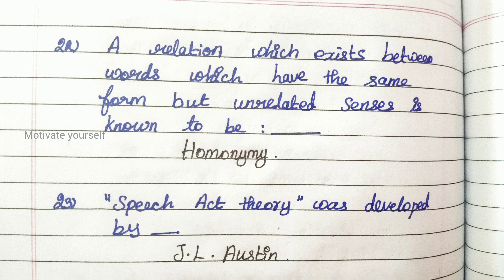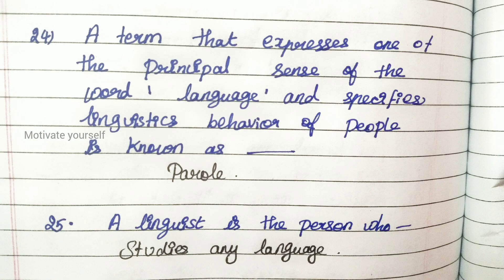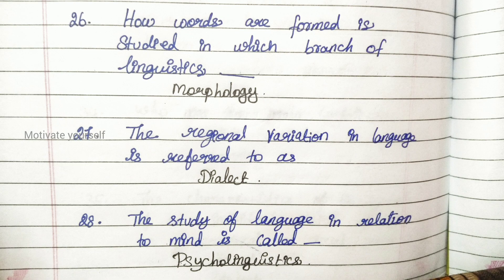Twenty-three: speech act theory was developed by J. L. Austin. Twenty-four: a term that expresses one of the principal senses of the word 'language' and specifies the linguistic behavior of people is known as 'parole'. Twenty-five: a linguist is the person who studies any language. Twenty-six: how words are formed is studied in which branch of linguistics? Answer: morphology.